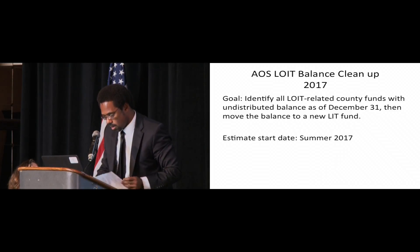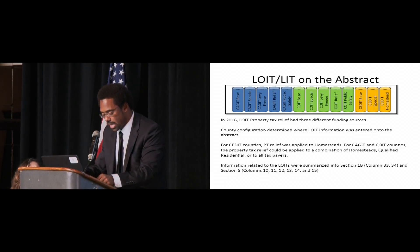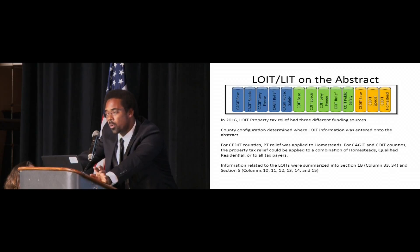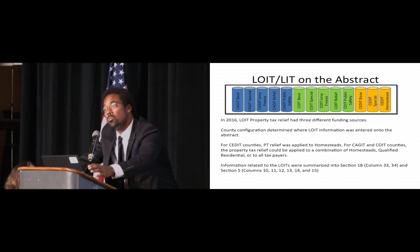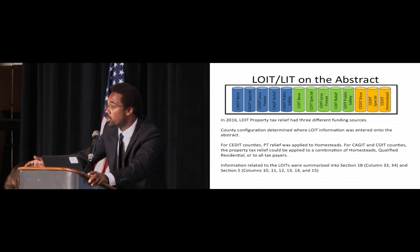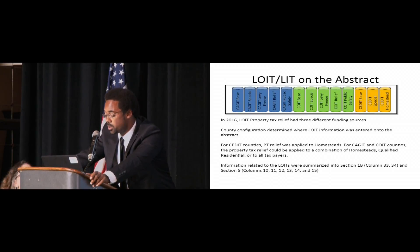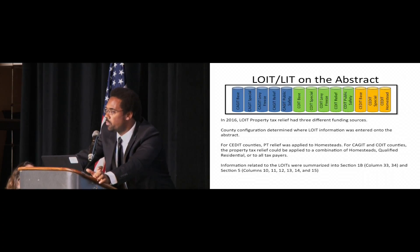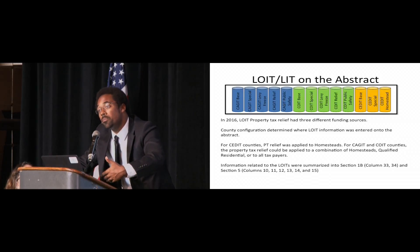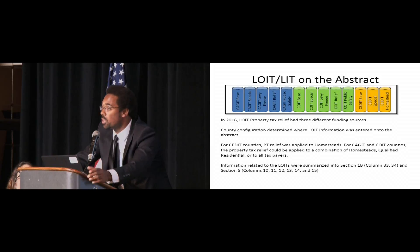Let's talk about the impact of this LOWIT-to-LIT change on the abstract. I want to do this as a before-and-after to show what the abstract looks like, why those columns existed, and then based on the changes to LIT, show what the current version of the abstract will look like. Not all counties are configured the same way. Last year, 61 of the 92 counties were offering some type of property tax relief, so you may or may not be familiar with these fields on the abstract.